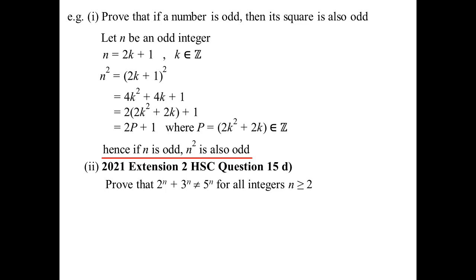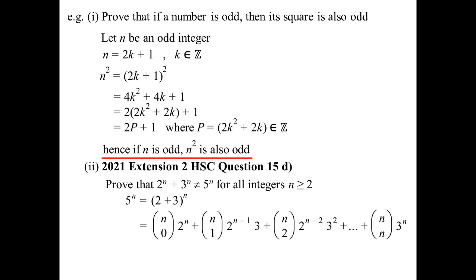Here's one from two HSCs ago. We're going to prove that 2^N + 3^N does not equal 5^N for all integers N greater than or equal to 2. Let's start with this expression — I'm going to change the 5 into 2 plus 3, which makes sense because we have 2 and 3 there. So 5^N equals (2 + 3)^N. Using the binomial theorem, I can expand that out.